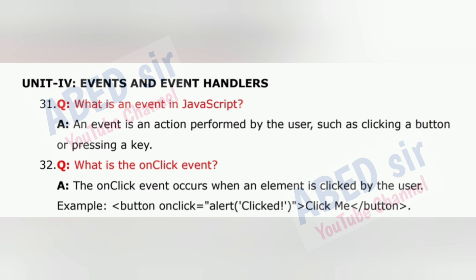Question 32: What is the onclick event? The onclick event occurs when an element is clicked by the user. Example: <button onclick='alert("clicked")'>Click me</button>.